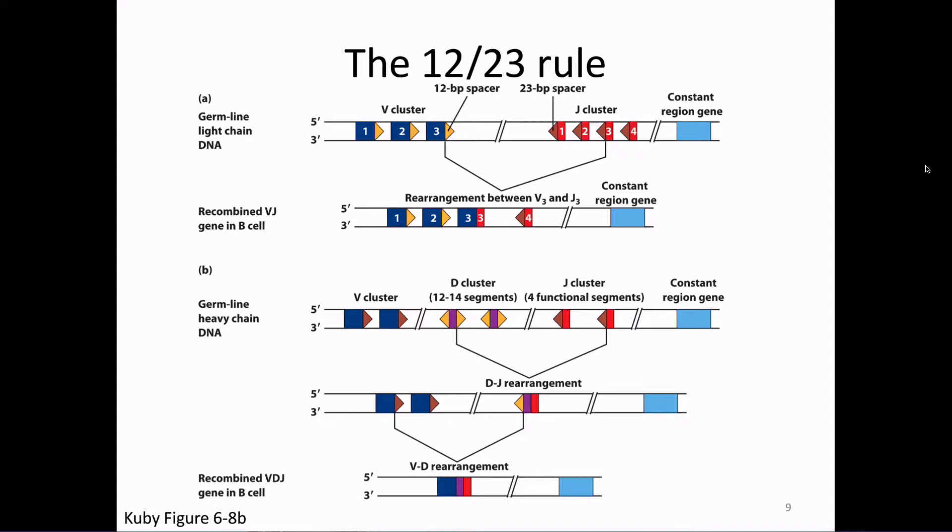You can see the 12-23 rule here: in a light chain at the top, V3 and J3 have been put together. The RSS is gone — the two are actually fused together. The stuff on the outside towards the 5' and 3' is still there: V1, V2 are still sitting there with their RSS, J4 is still sitting there with its RSS. In the case of the heavy chain, we end up combining D and J first, then V with that D and J.